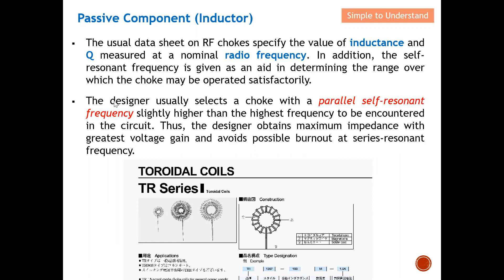The designer usually selects a choke with a parallel self-resonant frequency slightly higher than the highest frequency to be encountered in the circuit. This ensures the component's parallel self-resonant frequency stays above the circuit's operating frequency range. By doing so, the designer obtains maximum impedance with the largest voltage gain and avoids possible burnout at the series resonant frequency. With this, I'd like to end my discussion — please like and subscribe. Sincere thanks for your strong support!